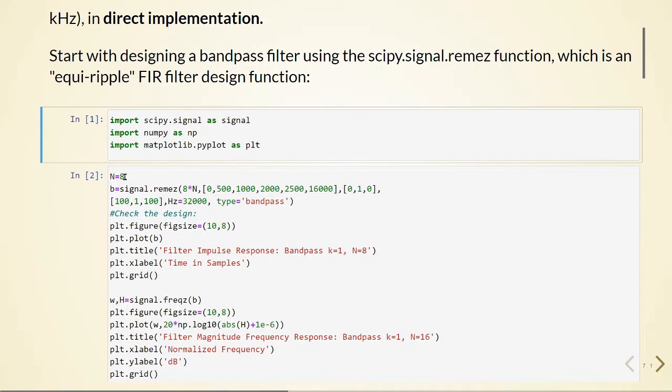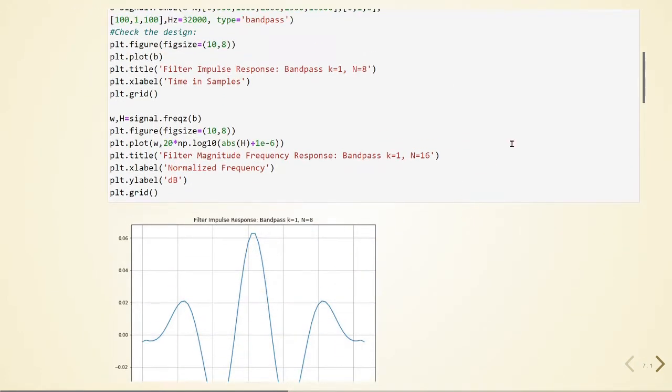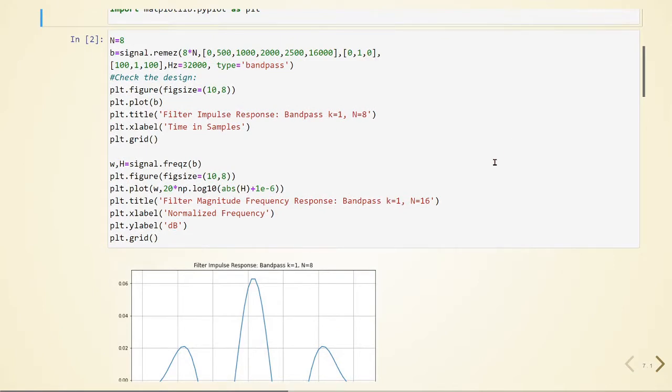So we are defining that N equals 8 and we are designing our bandpass filter with these specifications here. And here is the filter impulse response for the bandpass K equals 1 and N equals 8.